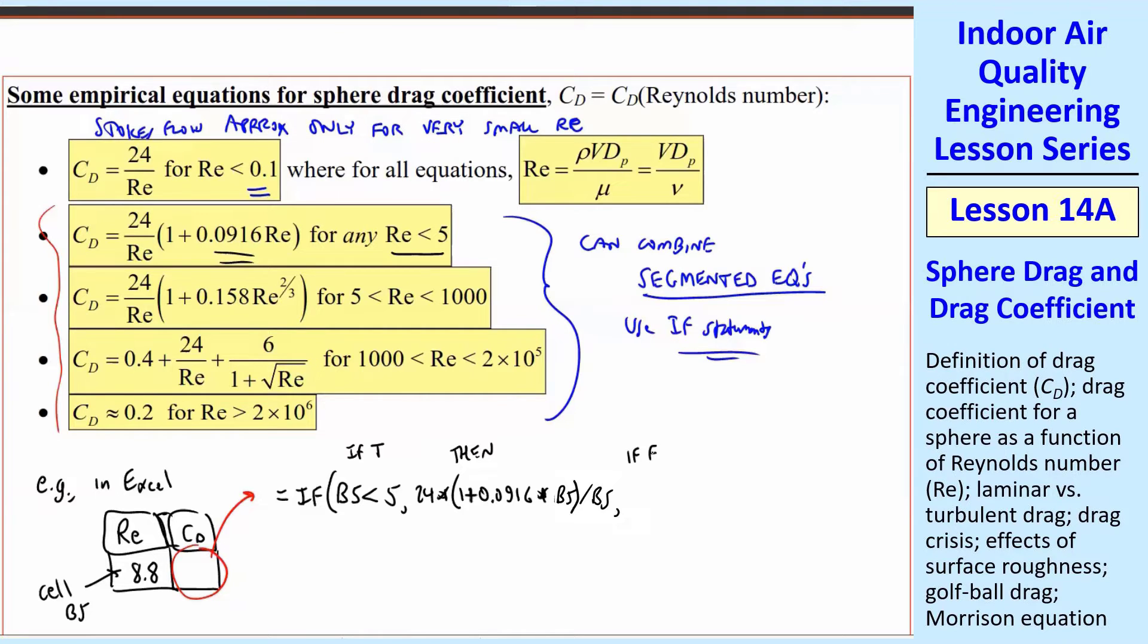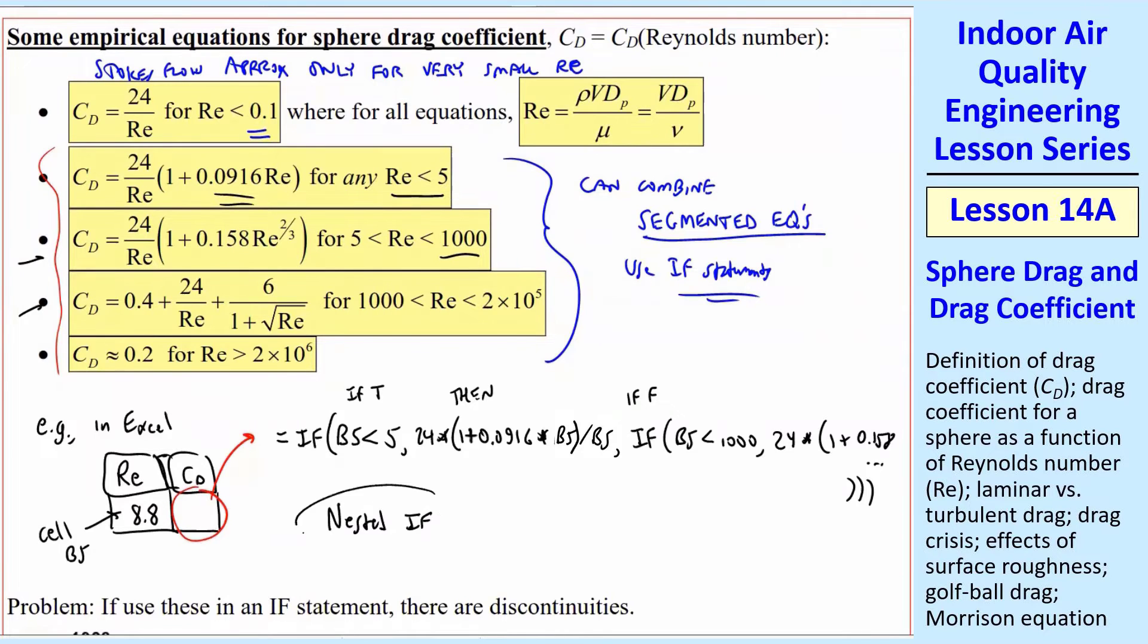So how this works is if this is true, then we do this. So if Reynolds number is less than 5, we're doing this equation. And then this is if it's not true, if it's false, we could just put something else. And in a nested if, I will put another if. So if it's not less than 5, then I'm going to say if B5 is less than now 1,000 for the next equation, comma. So if this is true, if B5 is less than 1,000, we want to use this third equation on my list. So I would put 24 times 1 plus 0.158, et cetera. And at the end, you have to close all your parentheses.